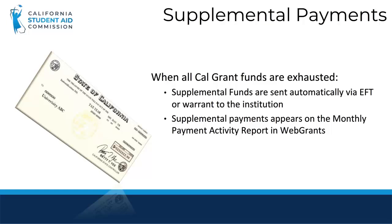Supplemental payments are sent on a weekly basis via check for reconciled payments or adjustments, typically after an advance has been exhausted. These supplemental payments are deductions from the running Cal Grant balance. When all Cal Grant funds are exhausted, the State Controller's Office is contacted automatically and additional funds are sent via EFT or Warrant. All supplemental payments will appear on the following month's monthly payment activity report.